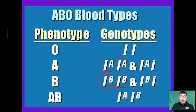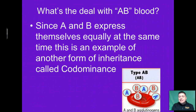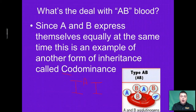There are two ways to be B: you can be homozygous B with only B alleles, or heterozygous B with one B allele and one O allele. To have AB blood, that means you have both an A allele and a B allele — both dominant alleles. Since A and B are both dominant, they express themselves equally at the same time. This is an example of another form of inheritance called co-dominance, where both the A and the B phenotype are expressed together.